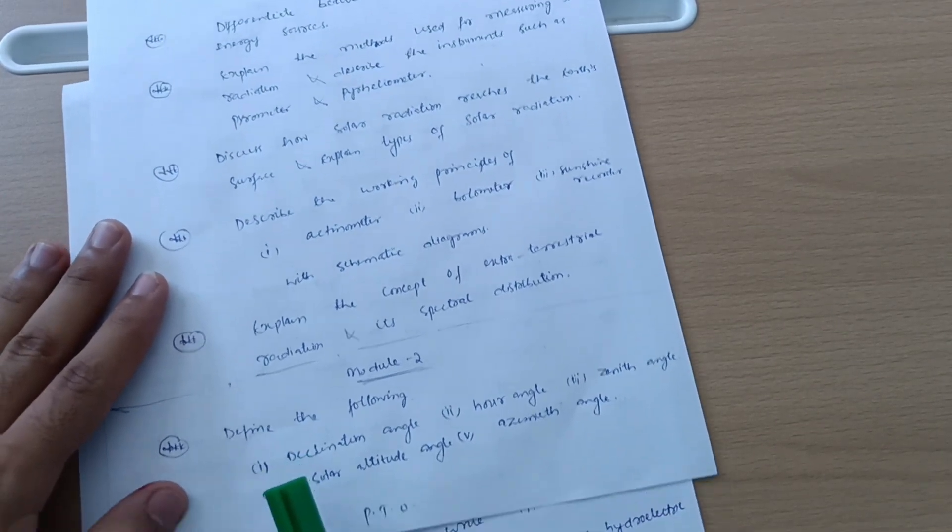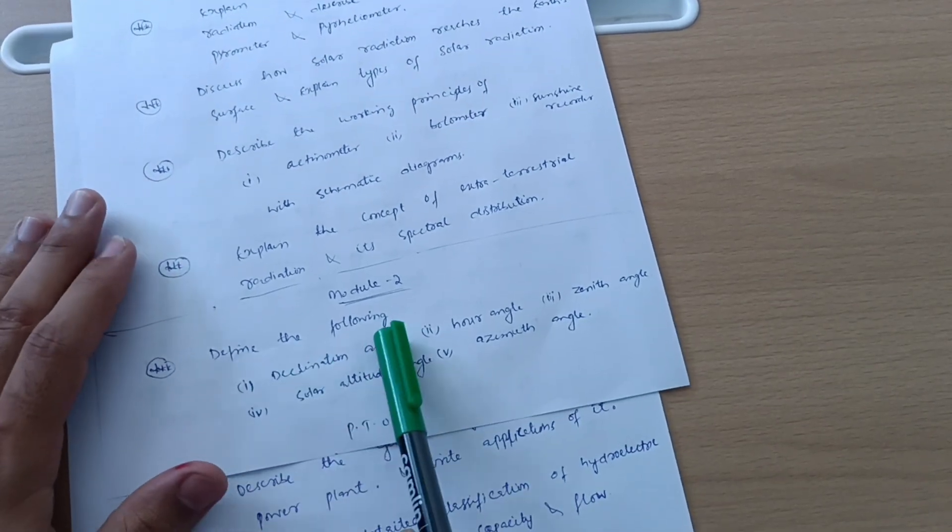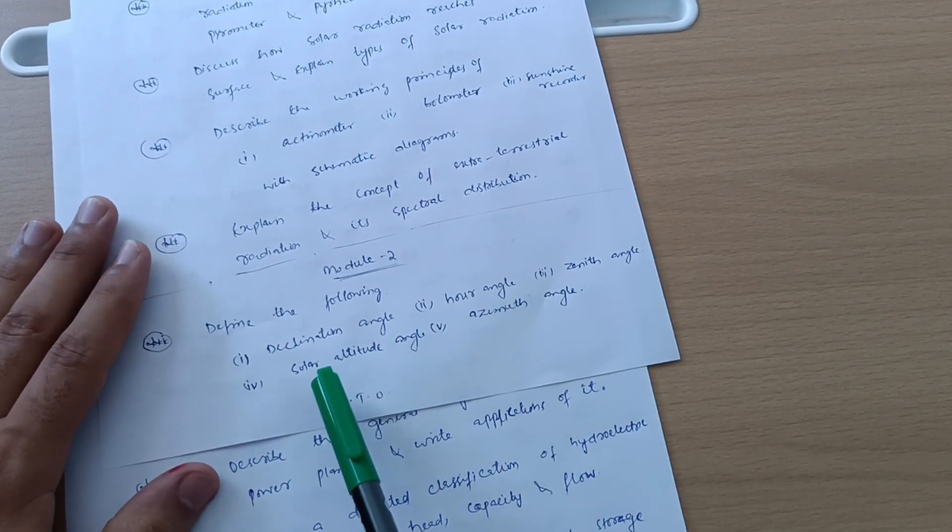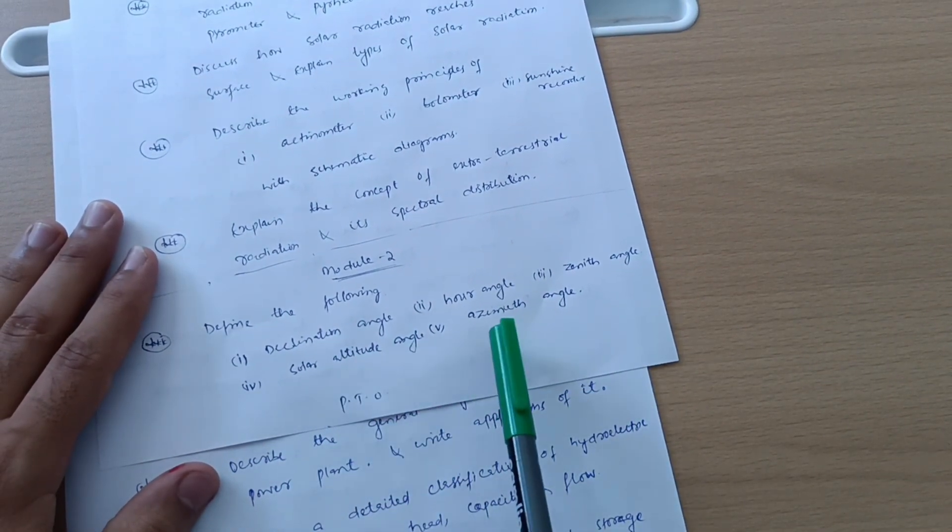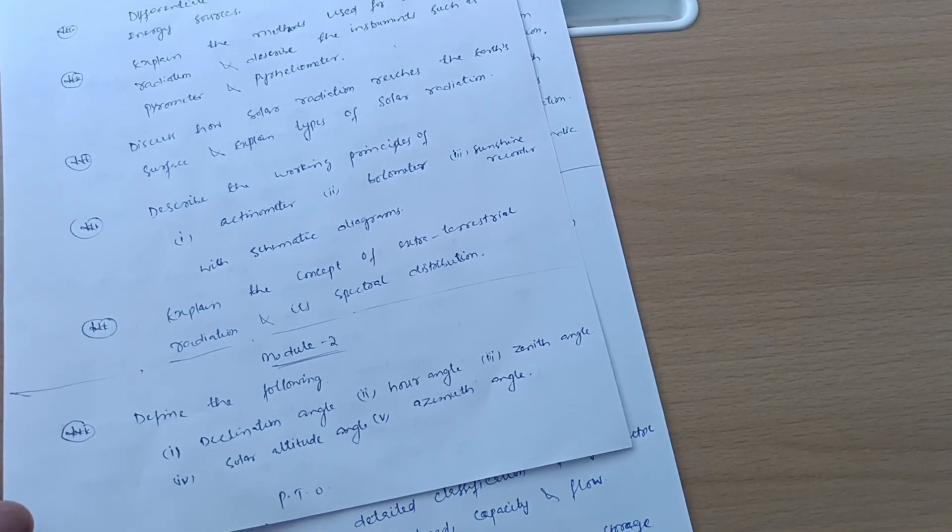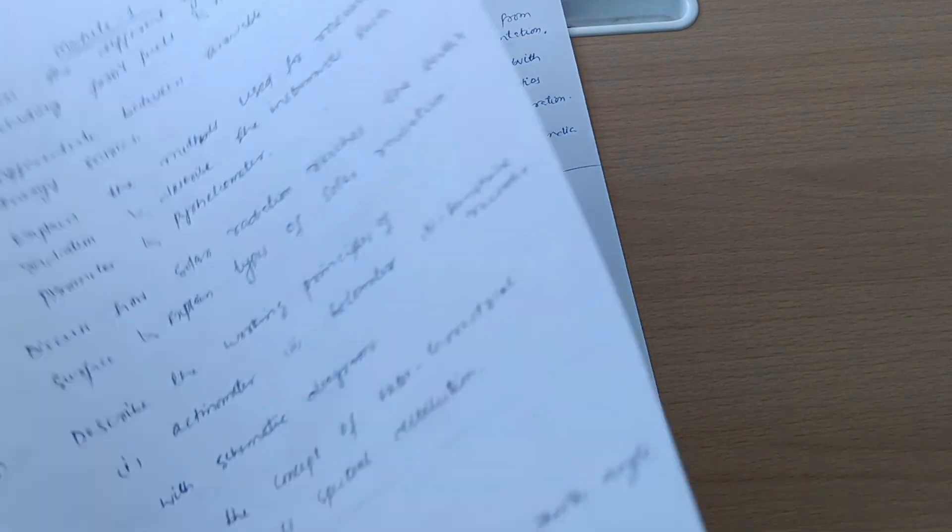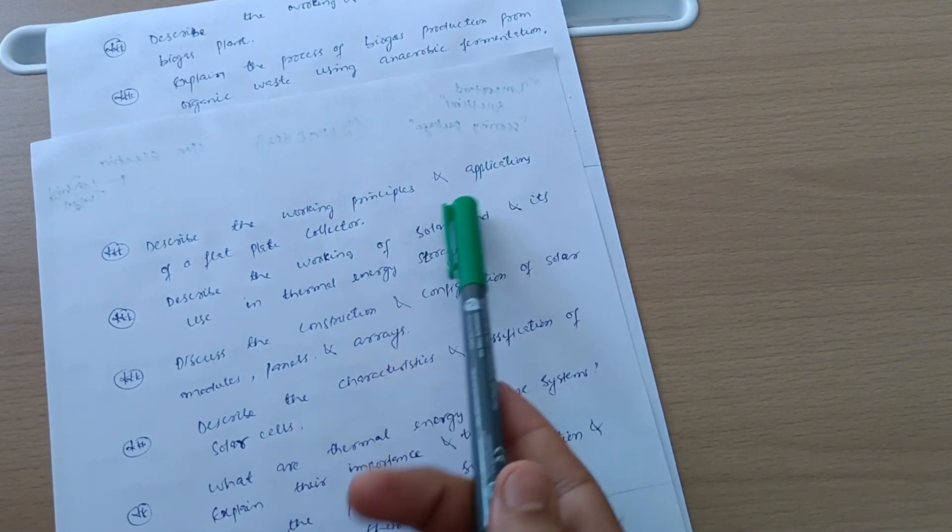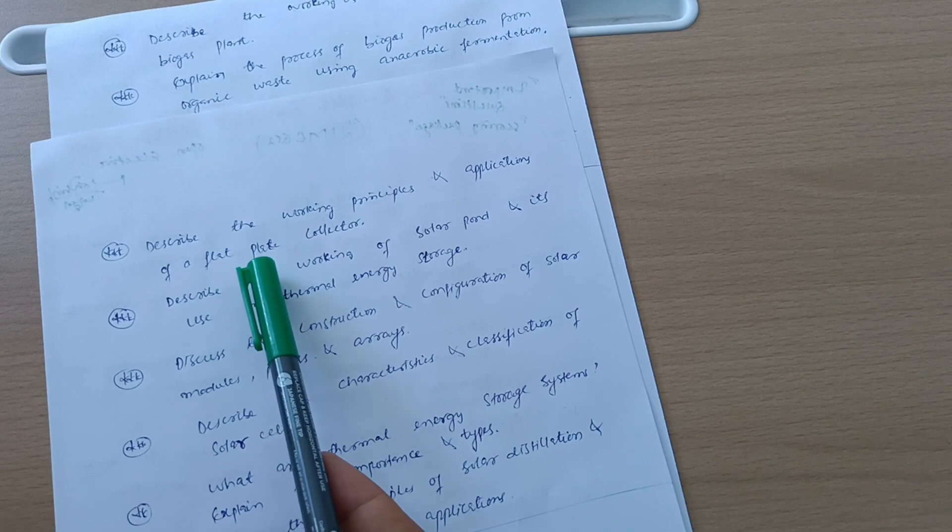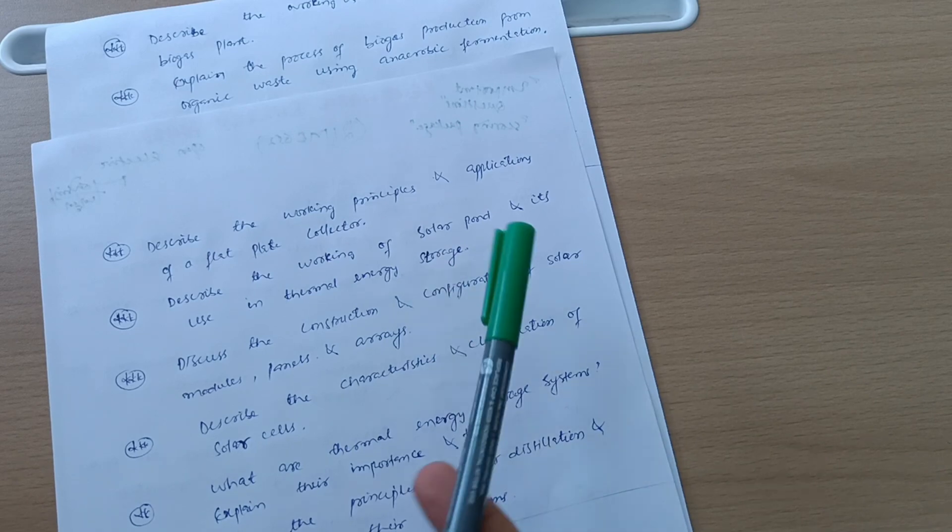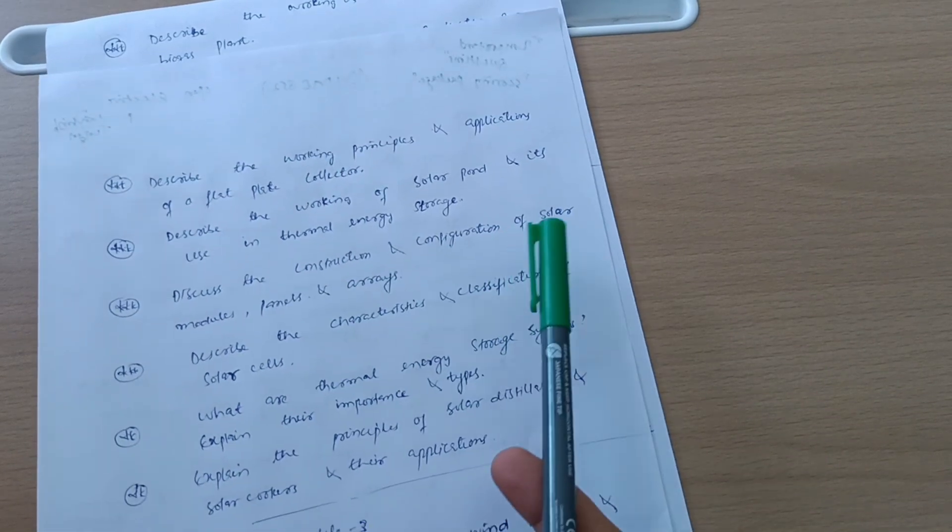Model Second: Define the following - declination angle, hour angle, zenith angle, solar altitude angle, and azimuth angle. These are small definitions, they may also give five marks or sometimes six marks. Describe the working principles and applications of flat plate collector. Describe the working of solar pond and its use in thermal energy storage.